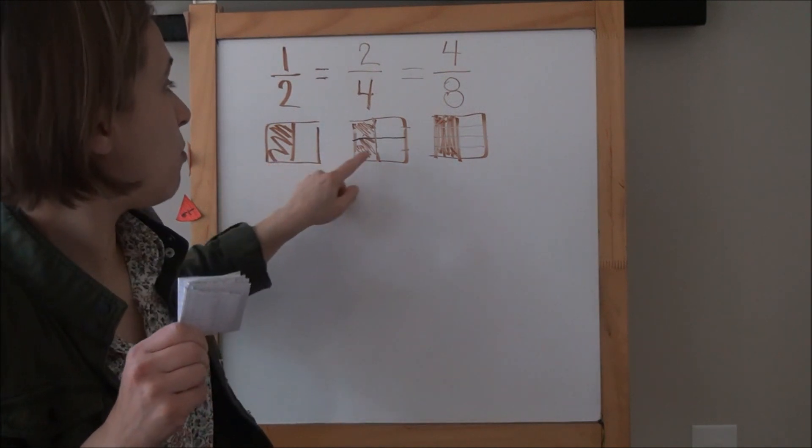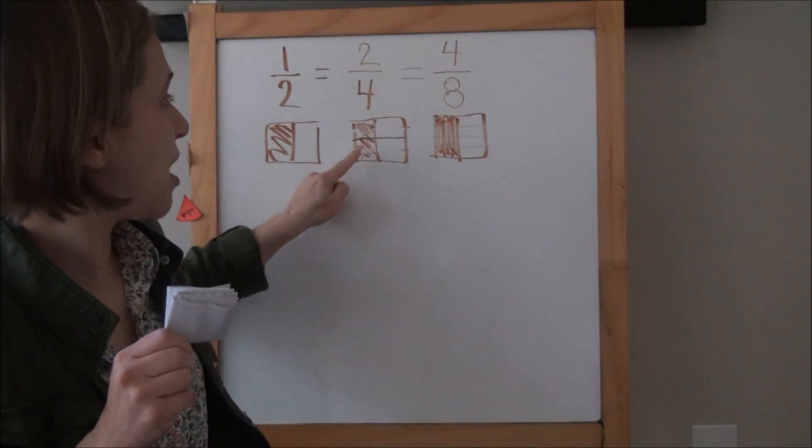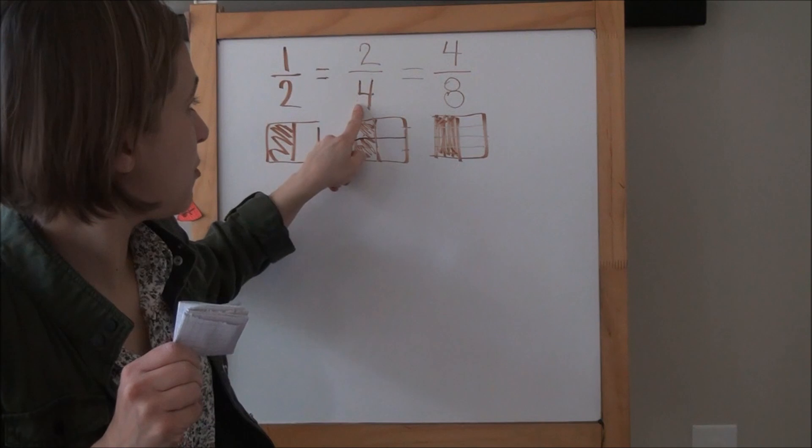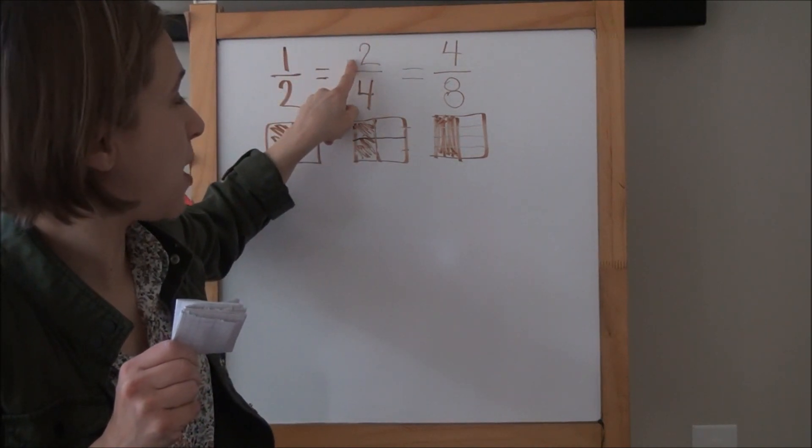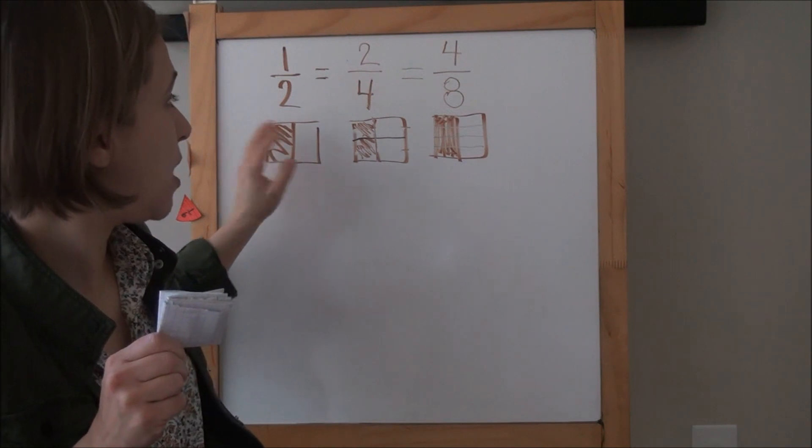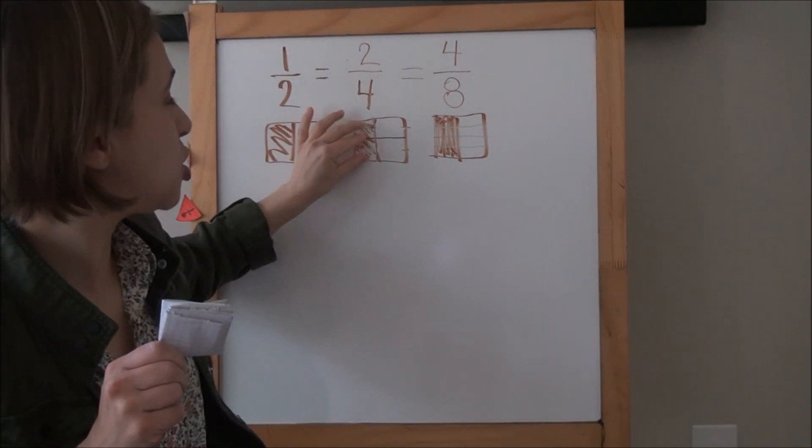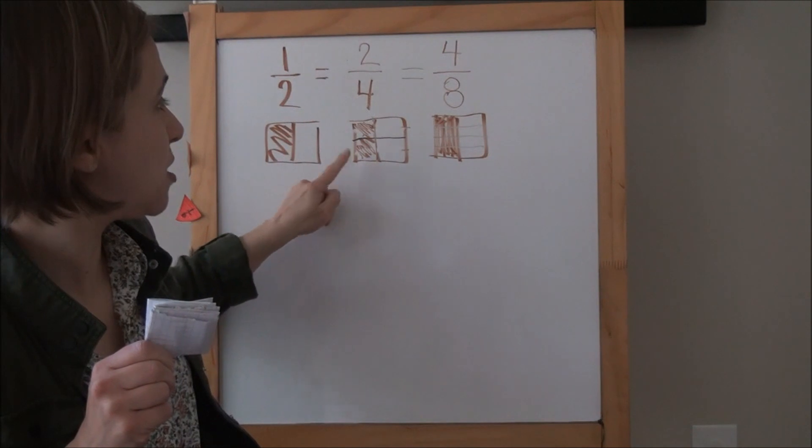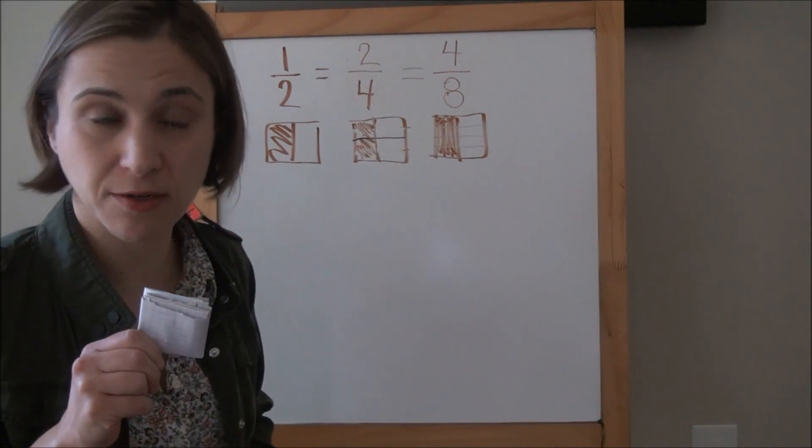Notice the patterns on the board. Originally we had one-half shaded. When we folded our small shape in half again, it doubled the number of parts and ended up doubling the parts that were shaded. We didn't color anything extra. We didn't take anything away. We still had the same amount shaded. It just changed the look or changed the name because we had extra parts.